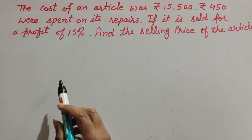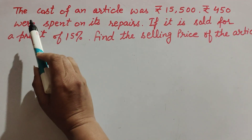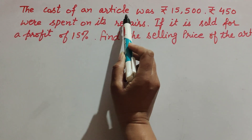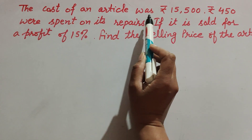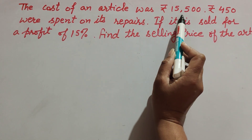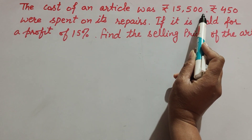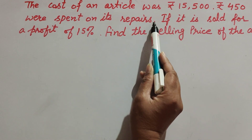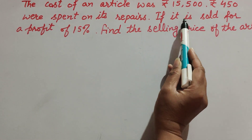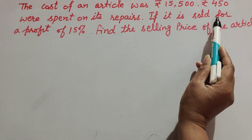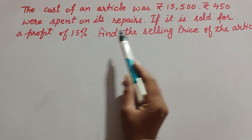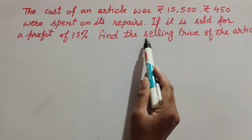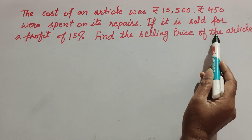Hello friends, welcome to my channel. In this video we discuss: the cost of an article was Rs 15,500 and Rs 450 was spent on its repair. If it was sold for a profit of 15%, find the selling price of the article.